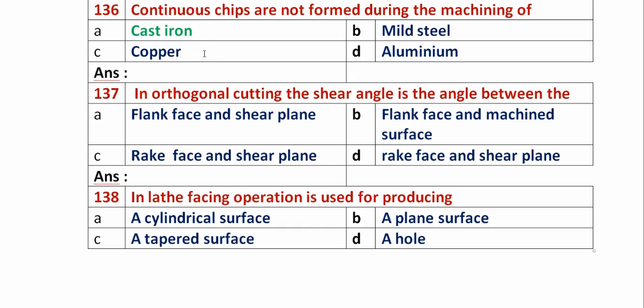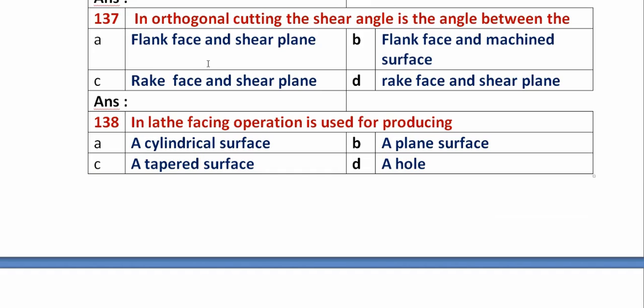Question 137: In orthogonal cutting, the shear angle is the angle between? Option A: flank face and shear plane. Option B: flank face and machining surface. Option C: rake face and shear plane. Option D: rake face and shear plane. In orthogonal cutting, the shear angle is the angle between the rake face and the shear plane. So option C is the right answer.